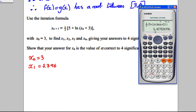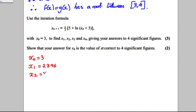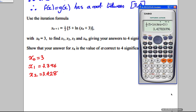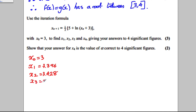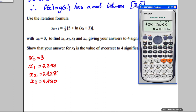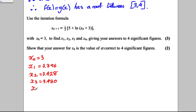Pressing equals gives: X₁ = 3.396, X₂ = 3.428, X₃ = 3.430, and X₄ = 3.430 (to 4 significant figures). Each one is given to four significant figures.